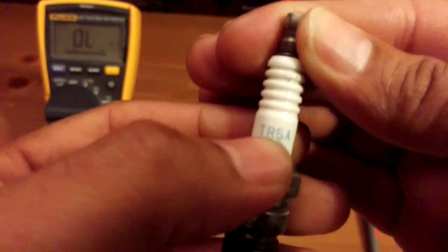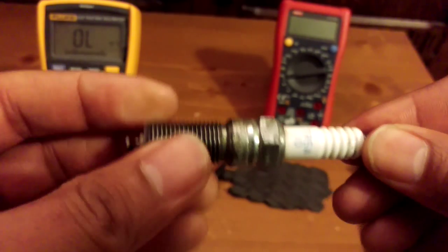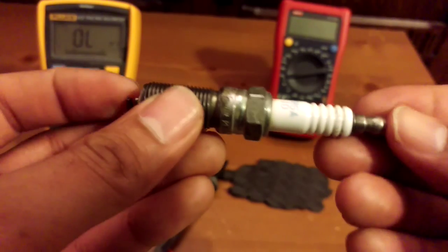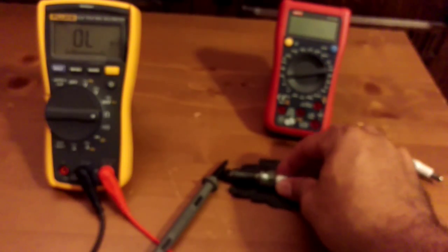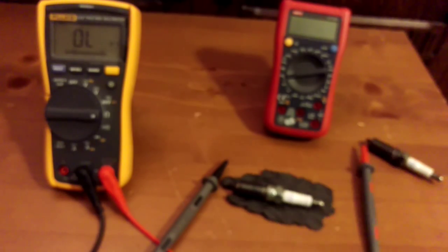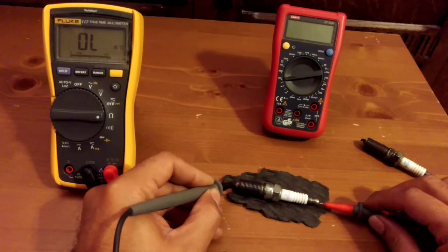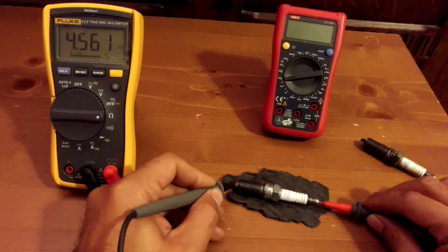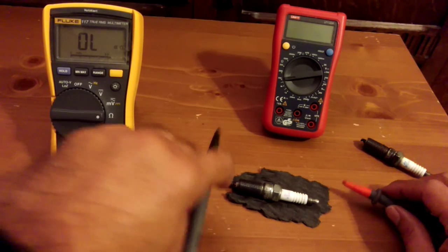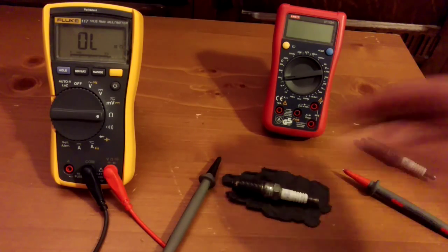Most car spark plugs will be a resistor type, and on those we're looking for a figure of between 3,500 to 5,000 ohms. I'll get that lined up just down there, very carefully, one on one tip, one on the other. There we go, 4,560 ohms, so that's between 3,500 and 5,000, so that's absolutely great.